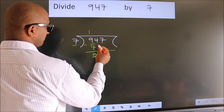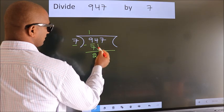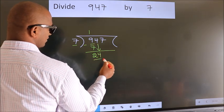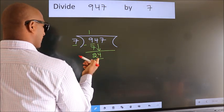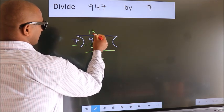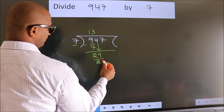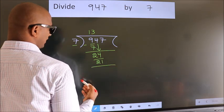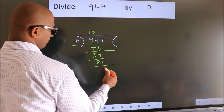After this, bring down the beside number. So 4 down. So 24. A number close to 24 in the 7 table is 7 threes, 21. Now we subtract. We get 3.